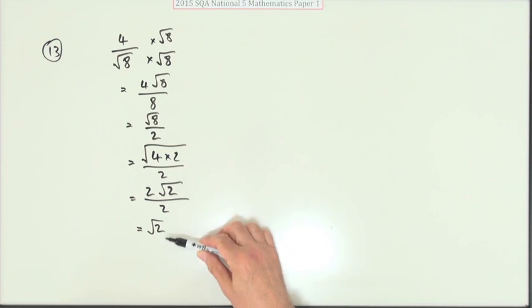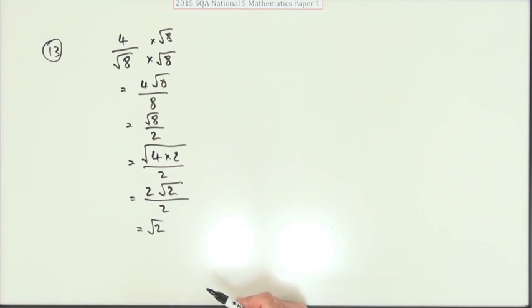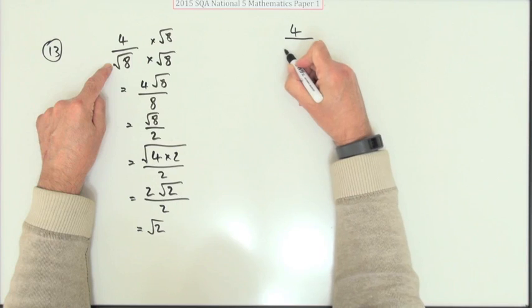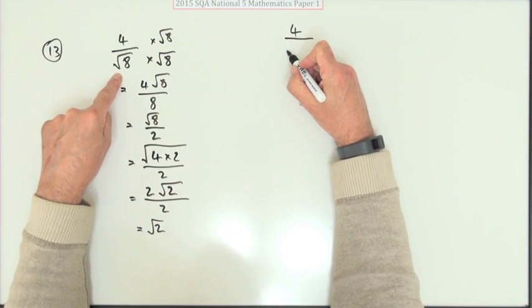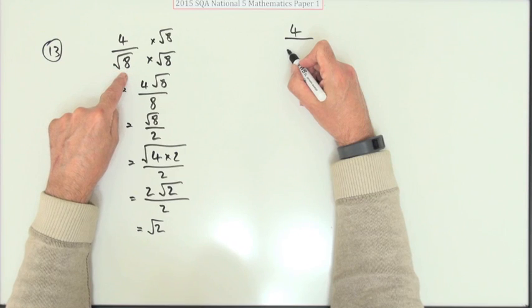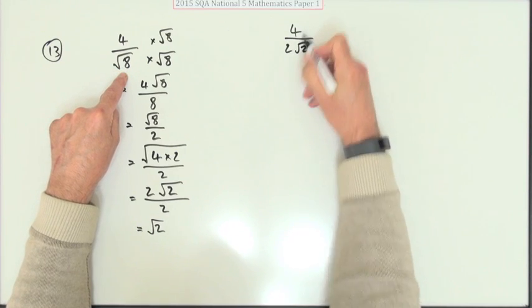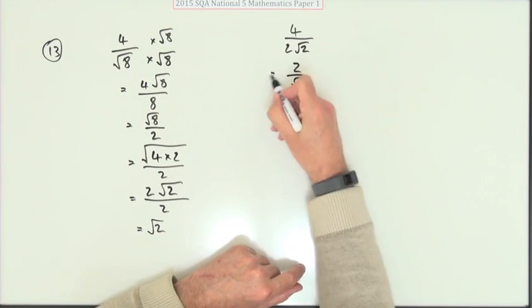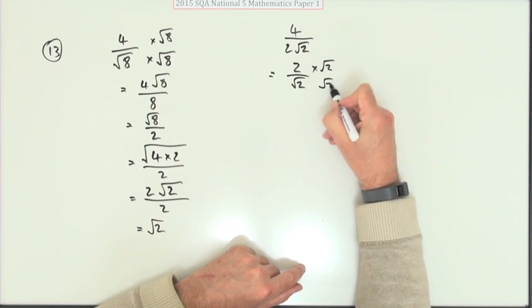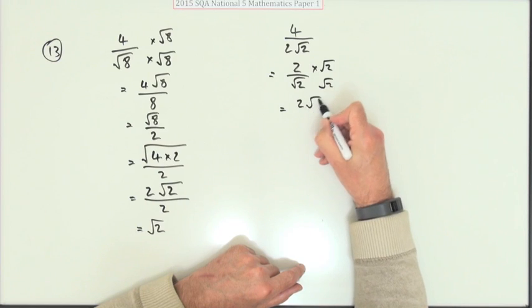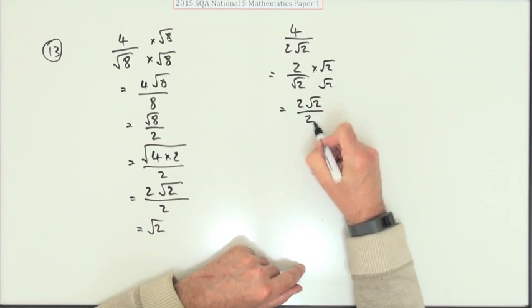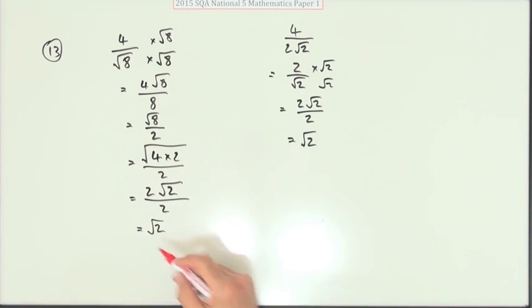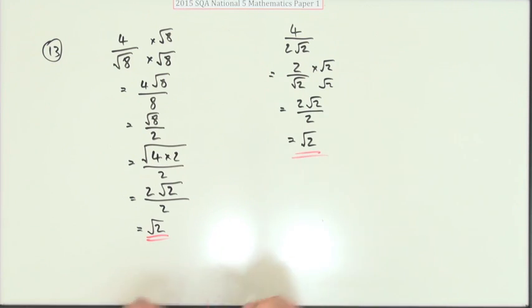The simplest answer is root two. The alternative method is to simplify first: break root eight — that's four twos, so root eight is two root two — meaning you've really got two over root two. Then multiply top and bottom by root two to get two root two over two, which is just root two. Whichever way you like.